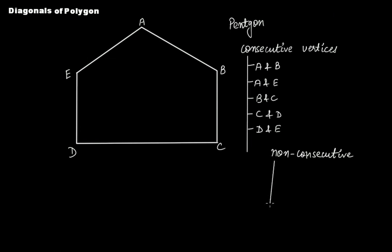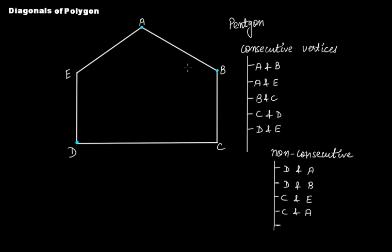Now, the non-consecutive vertices are: D and A, D and B, C and E, C and A, and B and E. So we have these pairs of non-consecutive vertices.